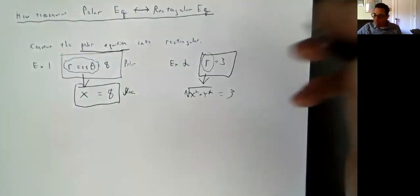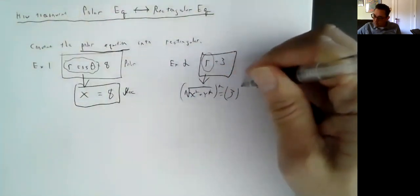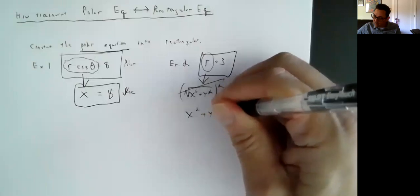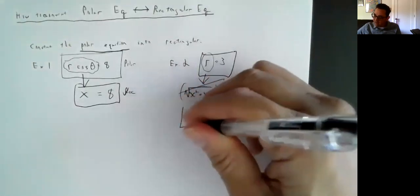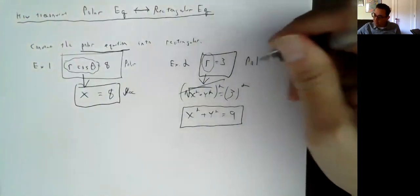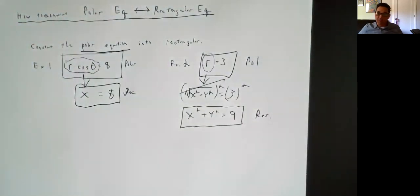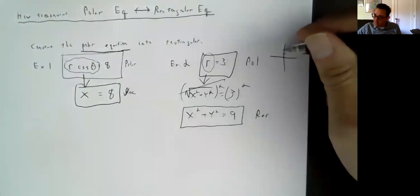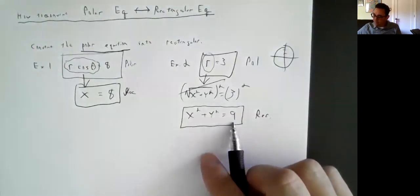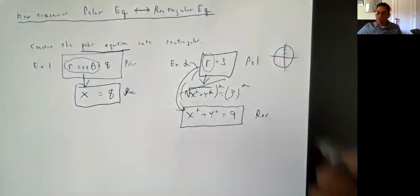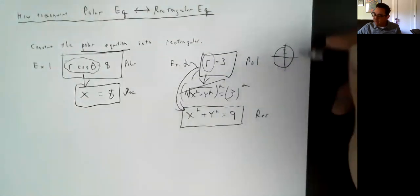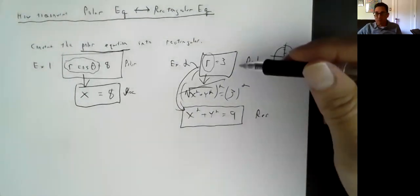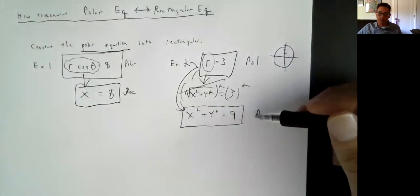There's one thing we can do to simplify — square both sides. The square and square root cancel, giving us x² + y² = 9, which is our finished rectangular equation. This makes sense: r = 3 is just the third ring on the polar grid, and x² + y² = 9 is a circle centered at (0, 0) with radius 3. Both equations draw the same picture — one in polar coordinates, one in rectangular coordinates.